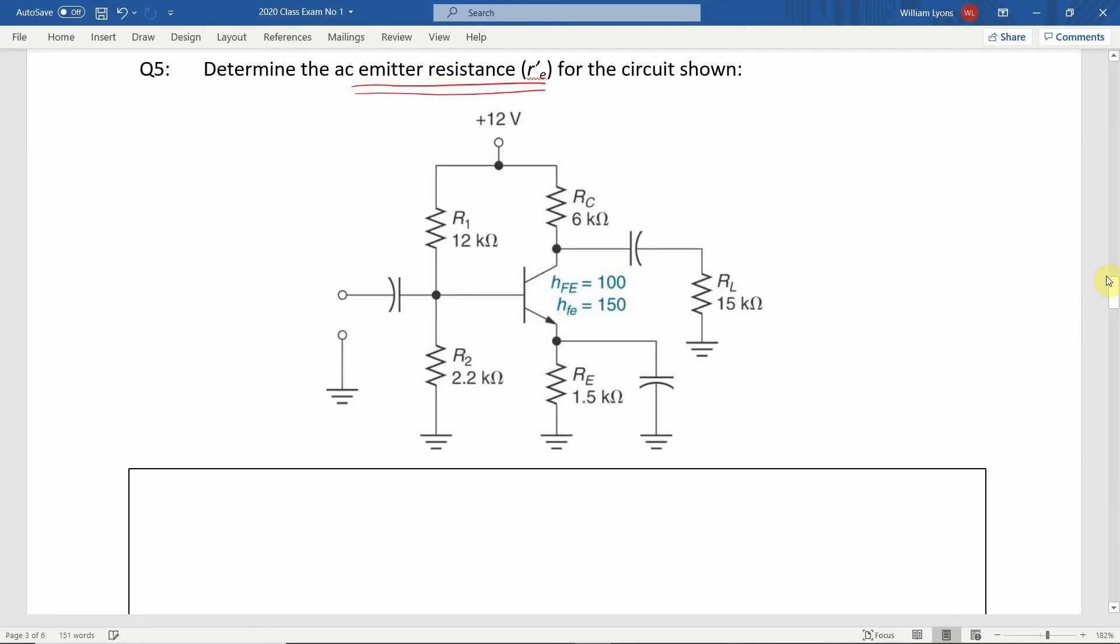The emitter base junction of a transistor has a dynamic resistance value that is considered only in AC calculations. This dynamic resistance is called AC emitter resistance and is used in some gain and impedance calculations. For a small signal amplifier, the value of the AC emitter resistance can be approximated by dividing 25mV by the emitter current IE.